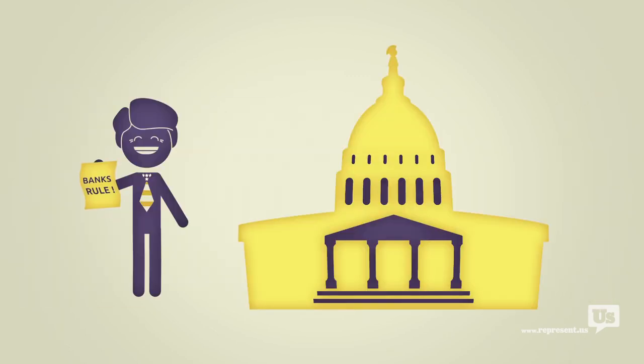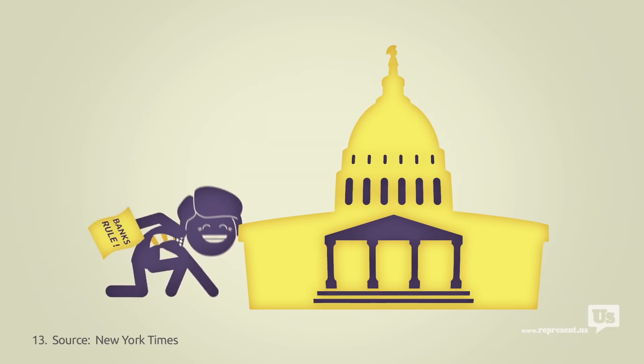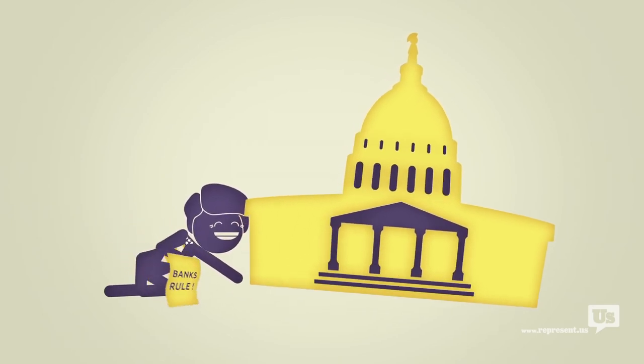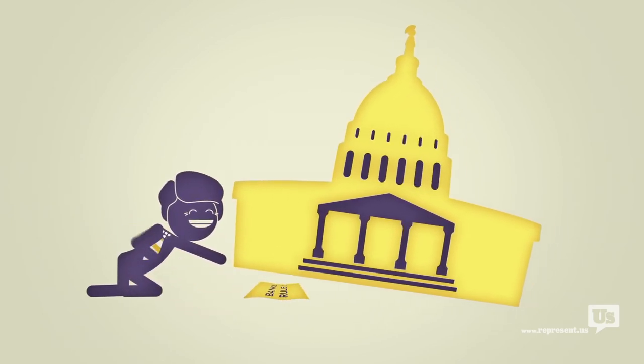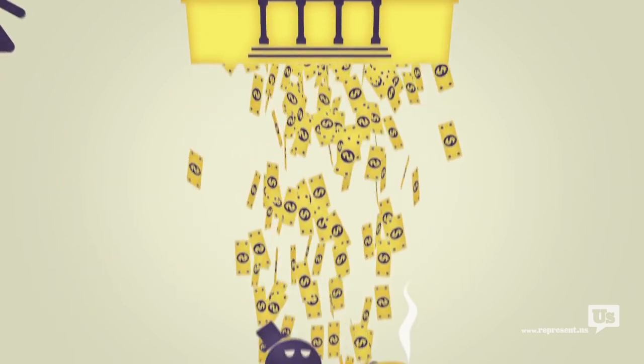And it's perfectly legal for those politicians to take the lobbyist written language and sneak it through Congress at the last second. So now you've got a law that greatly benefits the banks, and the whole process can start over.